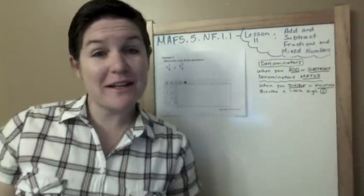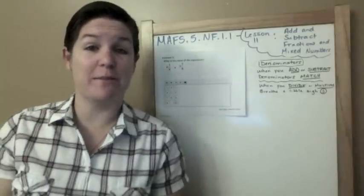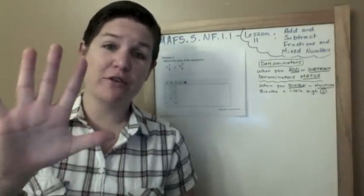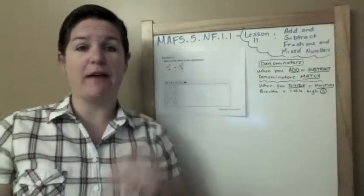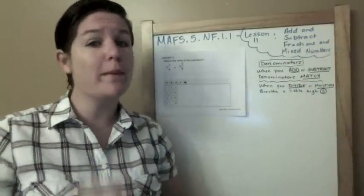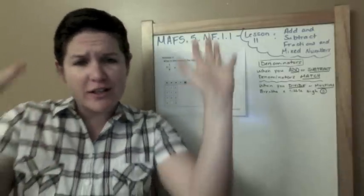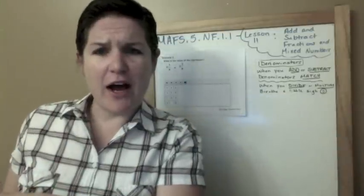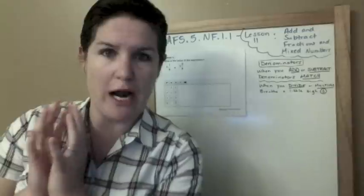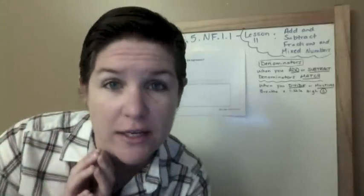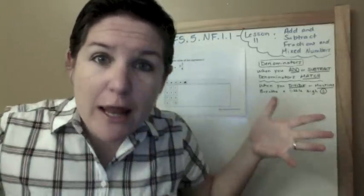What is happening everybody? Welcome to another episode of How to Pass the Math FSA. We've got the 5th grade edition for you. Today we'll be working on this standard. It's MAFS.5.NF.1.1. NF means that we are working on fractions.